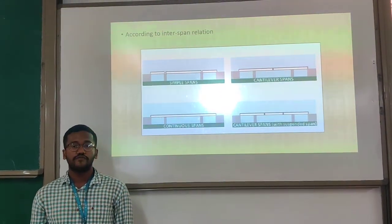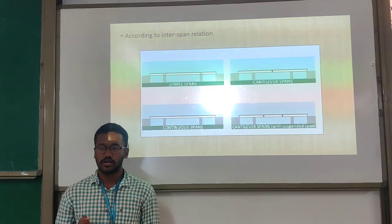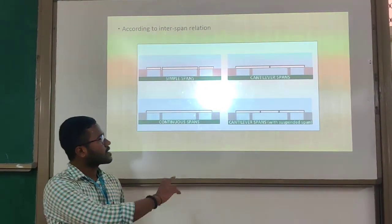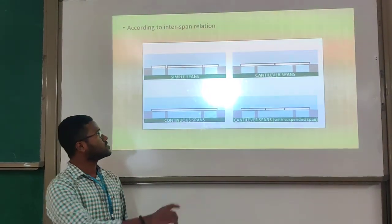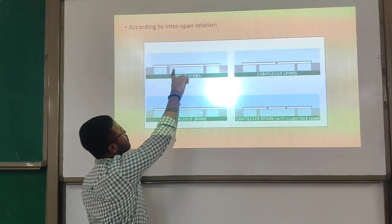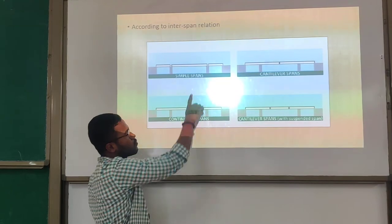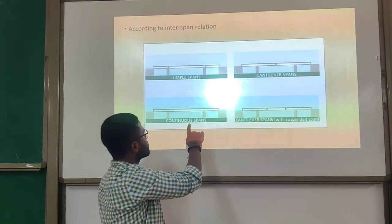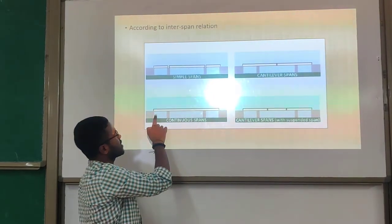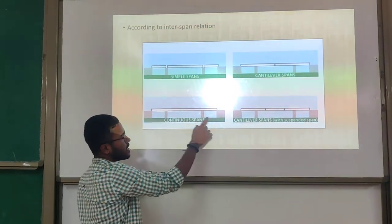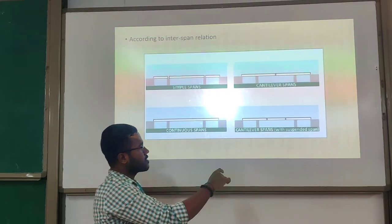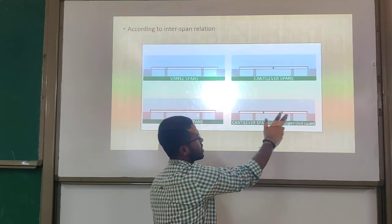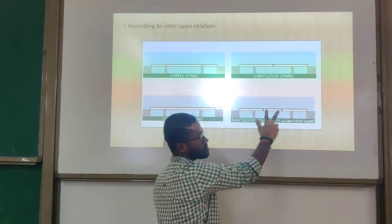According to inter-span relation, bridges are divided into simple, continuous, and cantilever types, as well as cantilever spans with suspended spans. In simple spans, the span runs continuously between two supports. In the cantilever span, there is a cantilever approach. In the continuous span, the bridge runs from the starting point to the end point. In cantilever spans with suspended load, there are three spans: the first is cantilever, the second is also cantilever, and in between it is suspended.